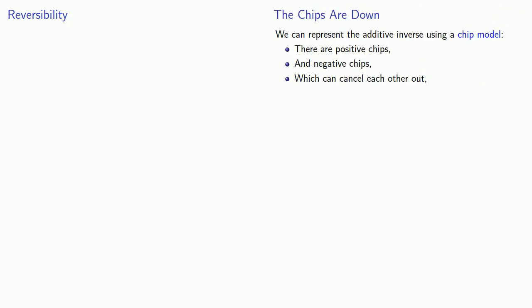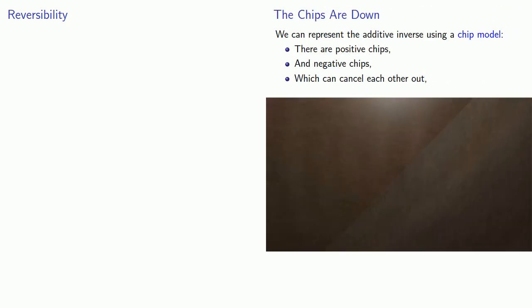One of the useful features about mathematics is that it is reversible. Remember, we can represent signed numbers using our chip model, where we have positive numbers represented by positive chips, negative numbers represented by negative chips, and the important feature is that the positive and negative chips can cancel each other out.